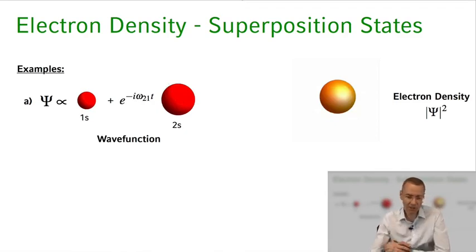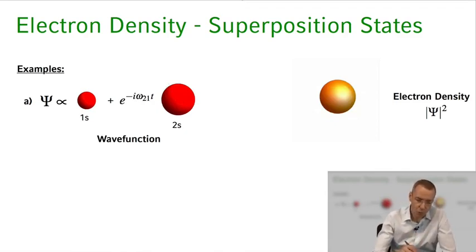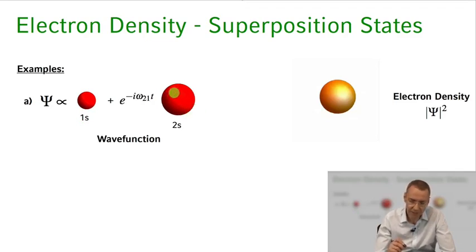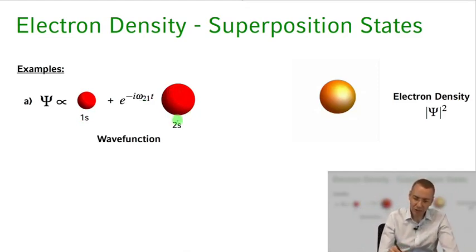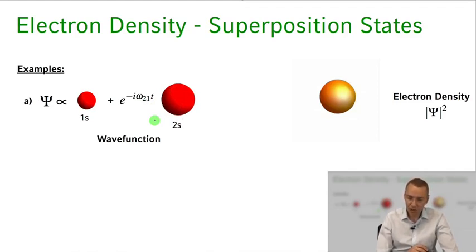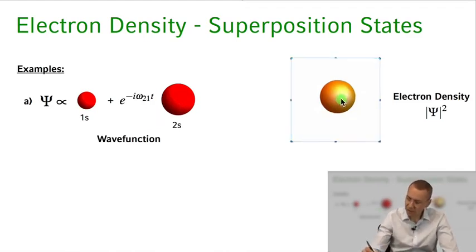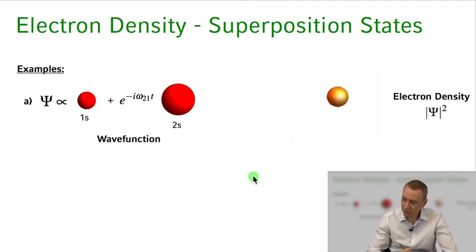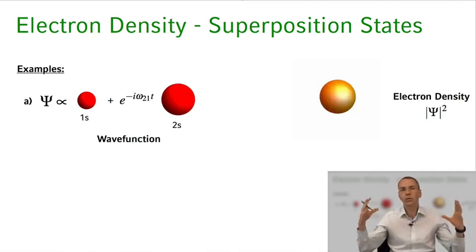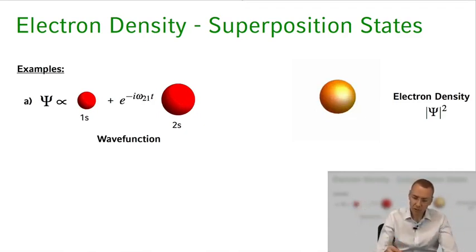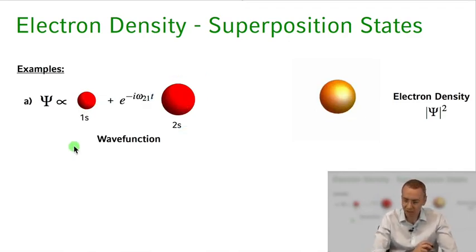Let's look at a few specific examples. Consider the hydrogen atom initially in the 1s state, excited to a superposition with the 2s state — a slightly bigger spherically symmetric electron cloud. There is an energy difference between the 2s and 1s states. As animated here, the electron cloud density basically shrinks and grows, shrinks and grows, corresponding to constructive and destructive interference between the larger and smaller cloud wave functions.